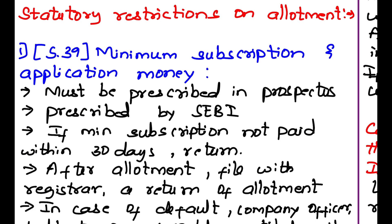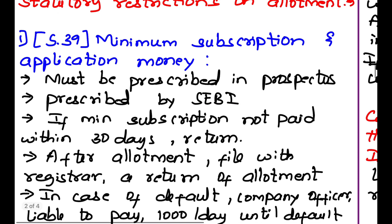The company is prescribed with a minimum subscription. That minimum subscription must be prescribed in the prospectus — that this much amount should be at least bought as a share. It is prescribed by SEBI, the Securities Exchange Board of India. If the minimum subscription is not paid within 30 days, then the shareholder's money is returned.